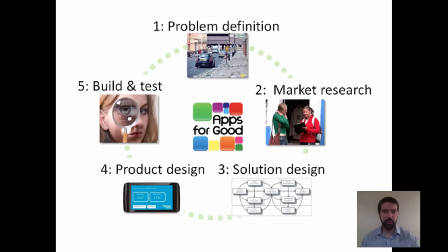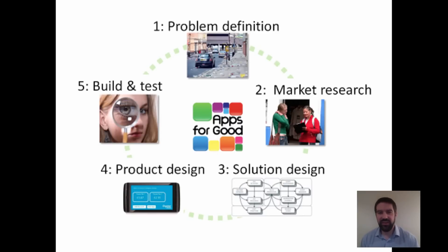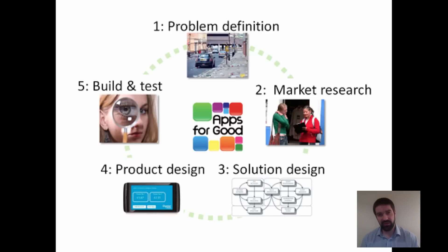The most important thing about any type of app development is getting young people to think about why they want to develop the app in the first place. The Apps for Good philosophy tends to do this quite well. Initially they ask children to find a problem they want to solve. Then they ask the children to carry out some market research to make sure it's not just their problem — that other people also agree it's a problem worth solving and therefore there's a market for it.